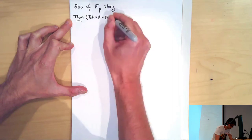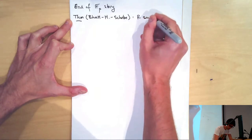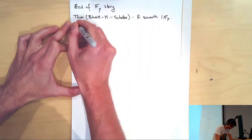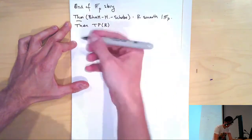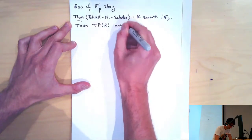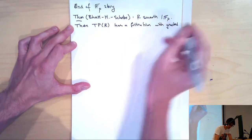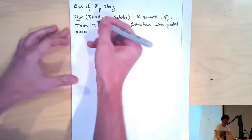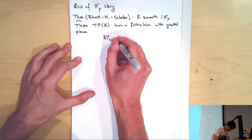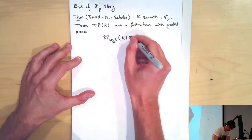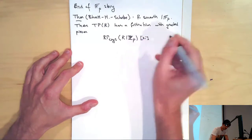The precise theorem — which was some joint work with Bhargav Bhatt and Peter Scholze — is: we take some R smooth over FP, and then its topological periodic cyclic cohomology has a two-periodic filtration whose graded pieces are given by all the shifts of the crystalline cohomology of this FP algebra.